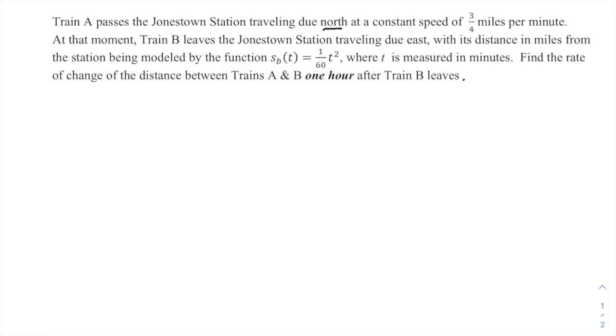Train A is traveling due north at a constant speed of three-quarters miles per minute. At that same moment, Train B leaves the station traveling due east with its distance in miles from the station being modeled by the function s_b(t) = (1/60)t², where t is measured in minutes. Find the rate of change of the distance between trains A and B one hour after Train B leaves.